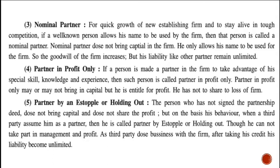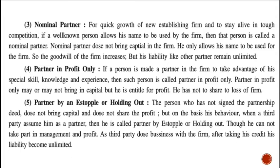The third partner is a nominal partner. For the quick growth of a newly establishing firm and to stay alive in tough competition, if a well-known person — such as a film star or a prominent business figure — allows their name to be used by the firm, then that person is known as a nominal partner.